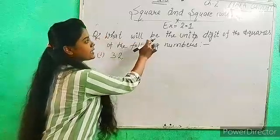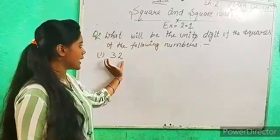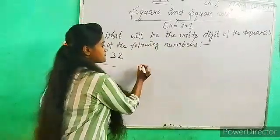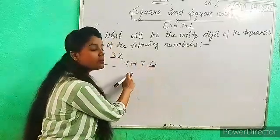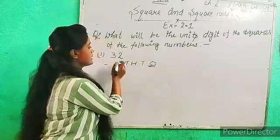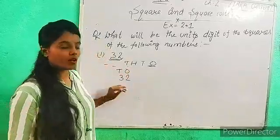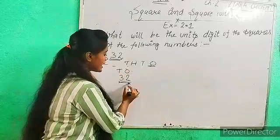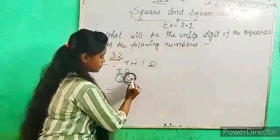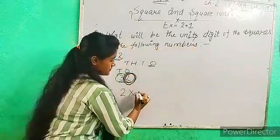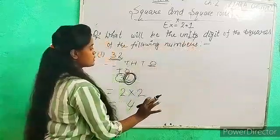What will be the unit digit of the square? How do we find the unit digit? We look at the unit digit of the original number. In the unit digit place, if the digit is 2, then 2 times 2 equals 4. So the unit digit of the square will be 4.